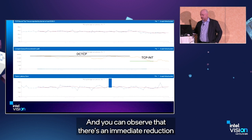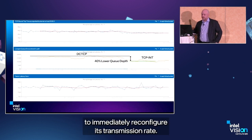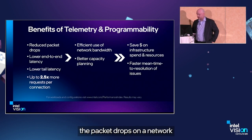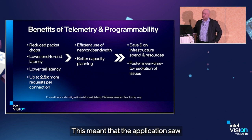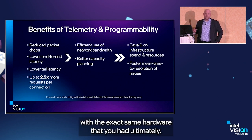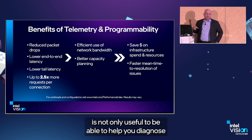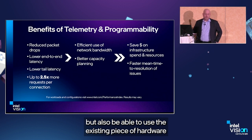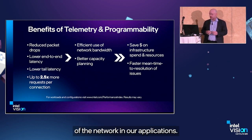You can observe an immediate reduction of up to 40% in the queue occupancy of the congested switch, due to the sender's ability to immediately reconfigure its transmission rate. On our testbeds with TCP INT, we were able to reduce packet drops and achieve lower end-to-end tail latency. The application saw up to 2.5 times more RPC transactions per connection — meaning 2.5 times more users with the exact same hardware.